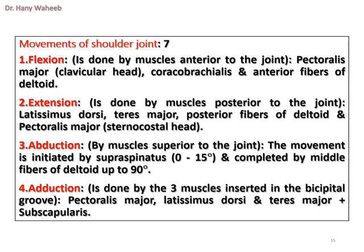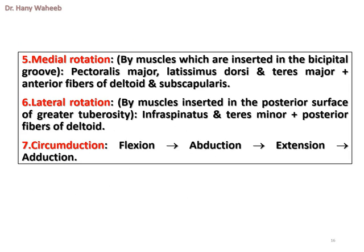4. Adduction: by the three muscles inserted in the bicipital groove — pectoralis major, latissimus dorsi, and teres major — in addition to subscapularis. 5. Medial rotation: by muscles inserted in the bicipital groove — pectoralis major, latissimus dorsi, teres major — plus anterior fibers of deltoid and subscapularis. 6. Lateral rotation: by muscles inserted in the posterior surface of the greater tuberosity — infraspinatus, teres minor — plus posterior fibers of deltoid. 7. Circumduction: flexion, then abduction, then extension, then adduction.